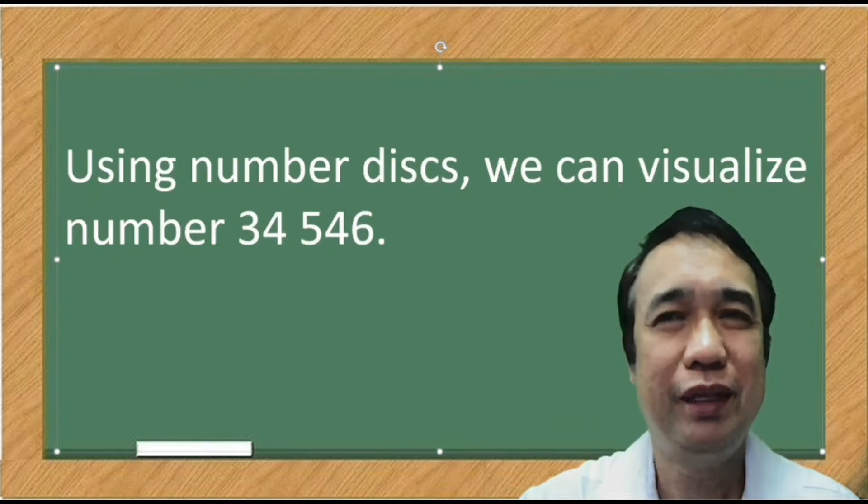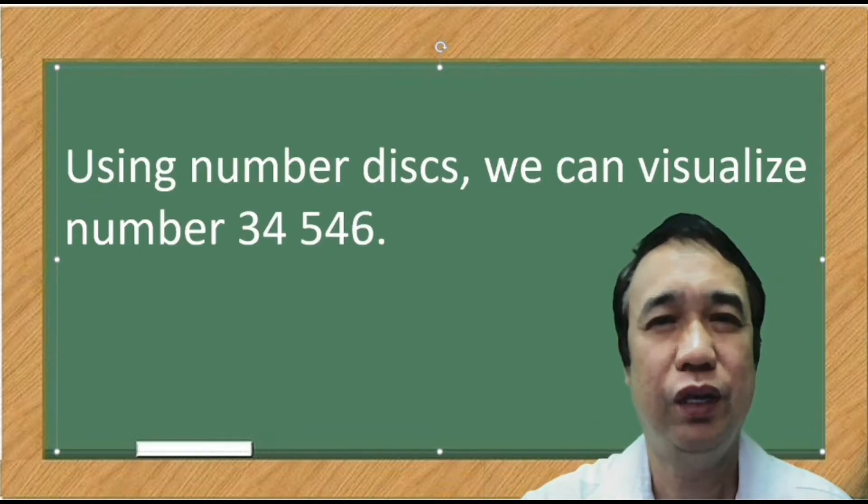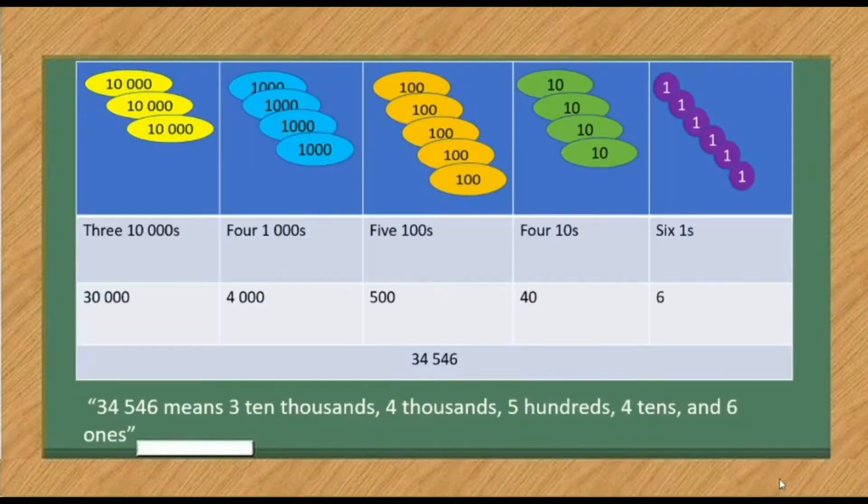Using numbered disks, we can visualize numbers 34,546. As you can see, there are 3 ten thousand disks, 4 one thousand disks, 5 one hundred disks, 4 ten disks, and 6 one disks.